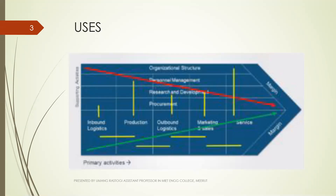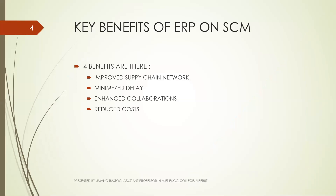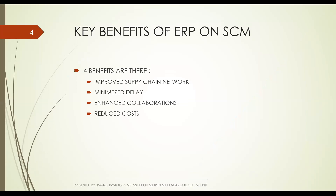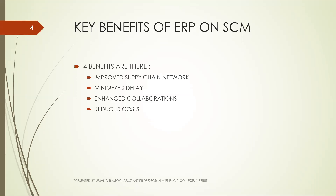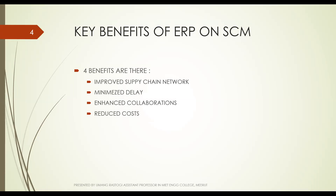Now we come to the key benefits of ERP on SCM — supply chain management. There are four key benefits. The first is improved supply chain network. ERP provides complete visibility across the supply chain network, which is highly difficult in manual processes. With ERP, an organization can monitor all statuses and activities across all suppliers, plants, storage facilities, and all members of the supply chain, making communication throughout the network much easier.